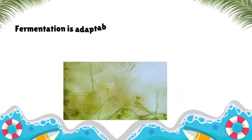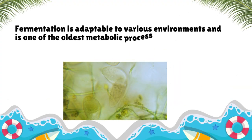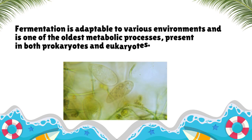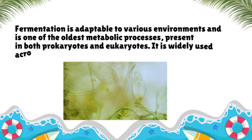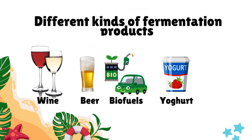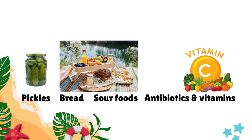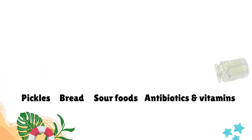Fermentation is adaptable to various environments and is one of the oldest metabolic processes, present in both prokaryotes and eukaryotes. It is widely used across different industries. Different kinds of fermentation products include wine, beer, biofuels, yogurt, pickles, bread, sour foods, antibiotics, and vitamins.